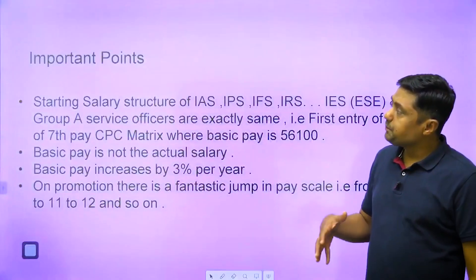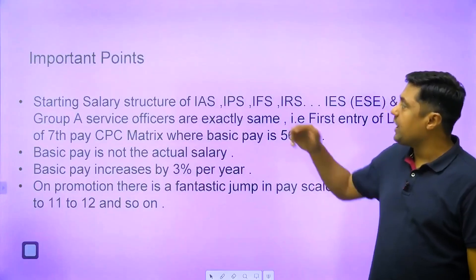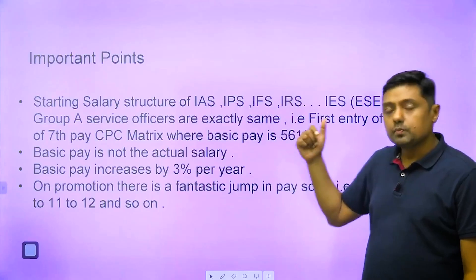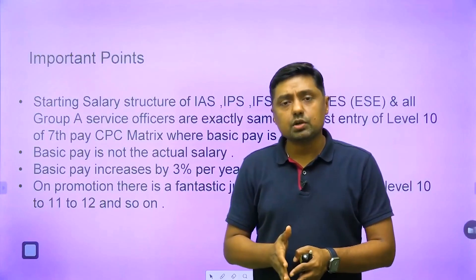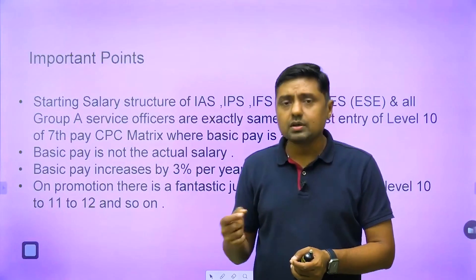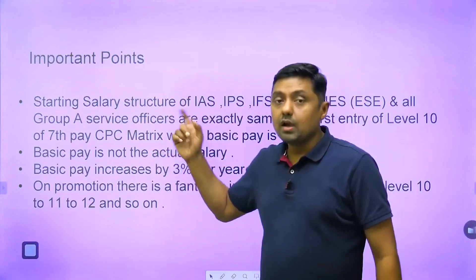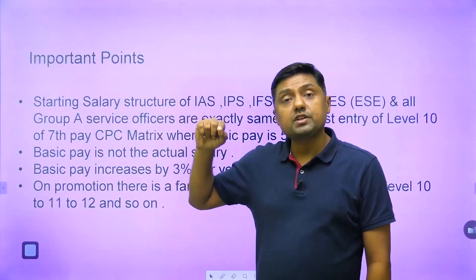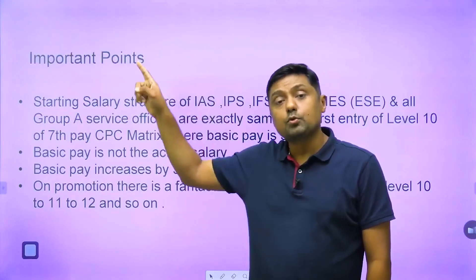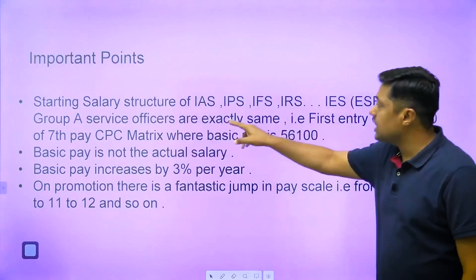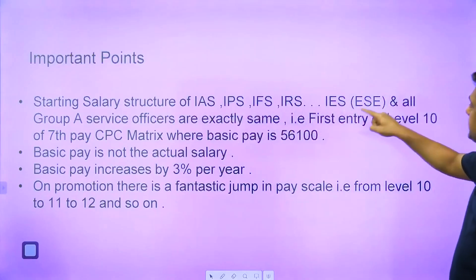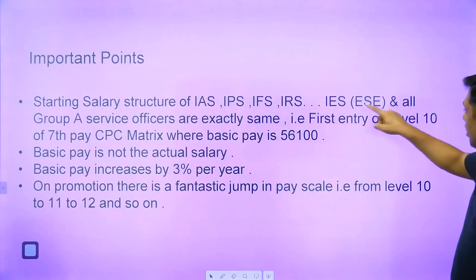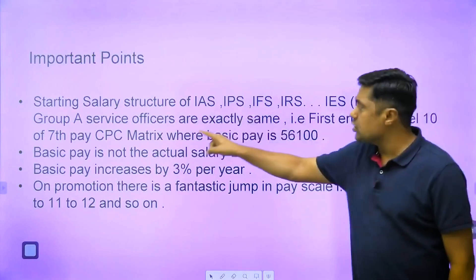Finally, comparing IES salary with IPS, IFS, and IRS — all are Class A officers. When clearing engineering services, the job is called technocrats, while IPS/IFS/IRS are called bureaucrats, but the pay band remains the same for all. They all start at Level 10 with ₹56,100 and go up to Level 18. Don't confuse IES (Indian Engineering Services) with Indian Economic Services. All Group A services officers have exactly the same pay structure.